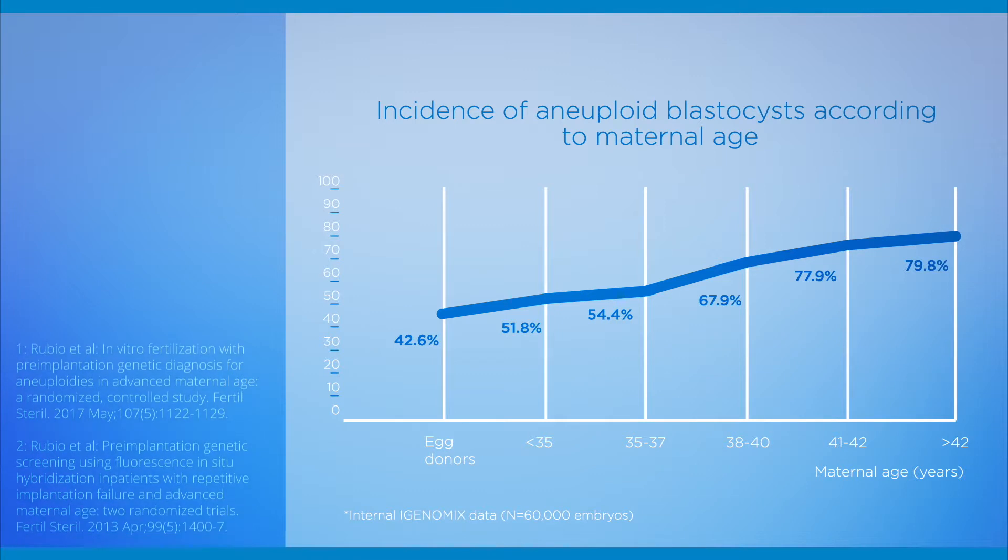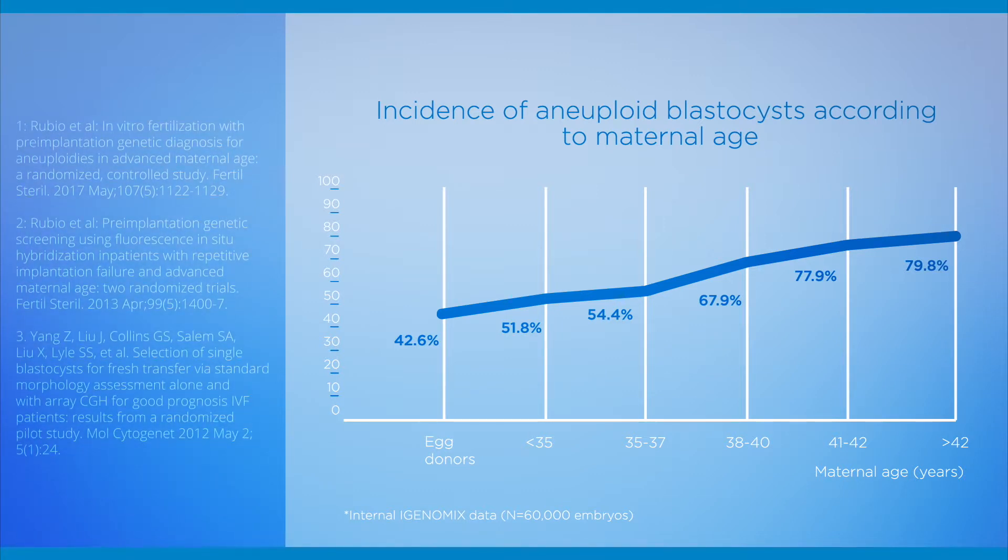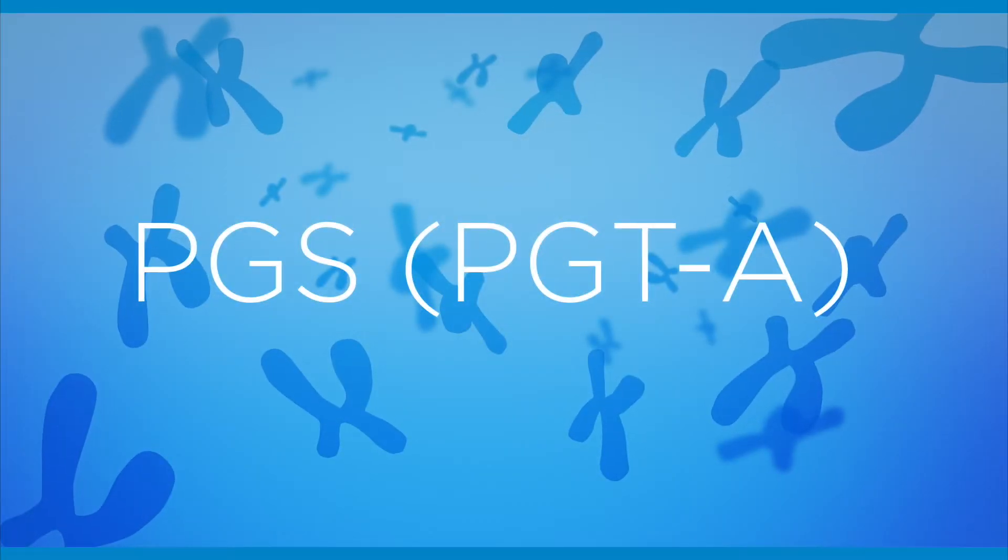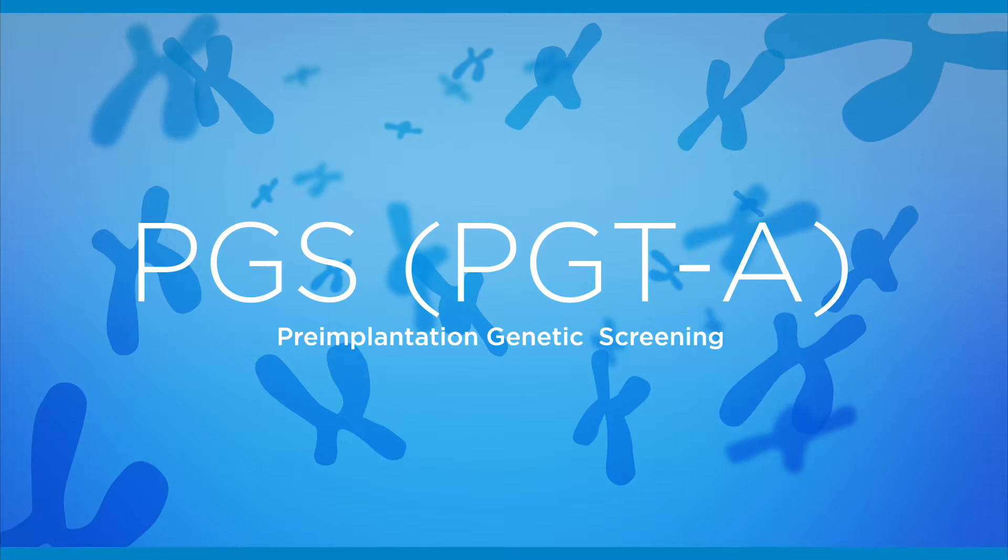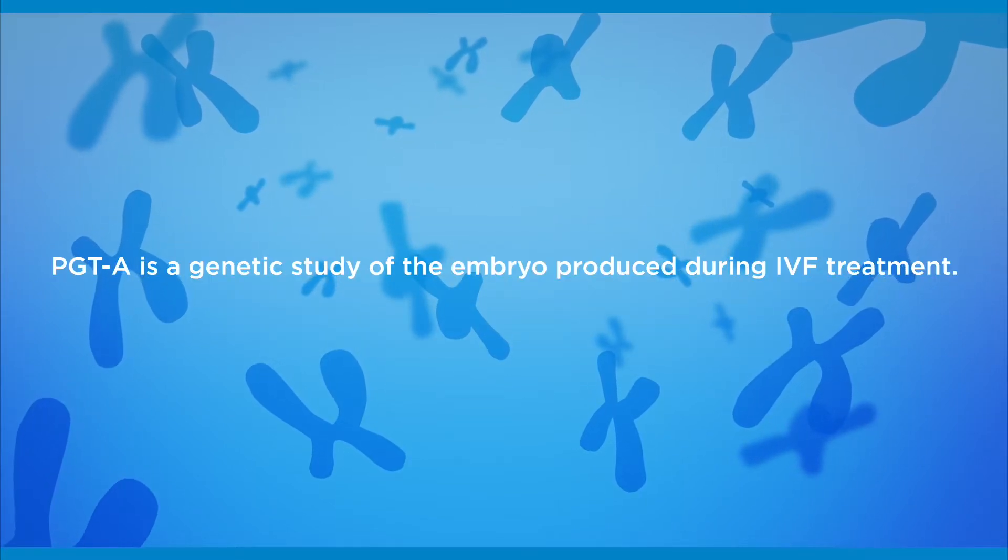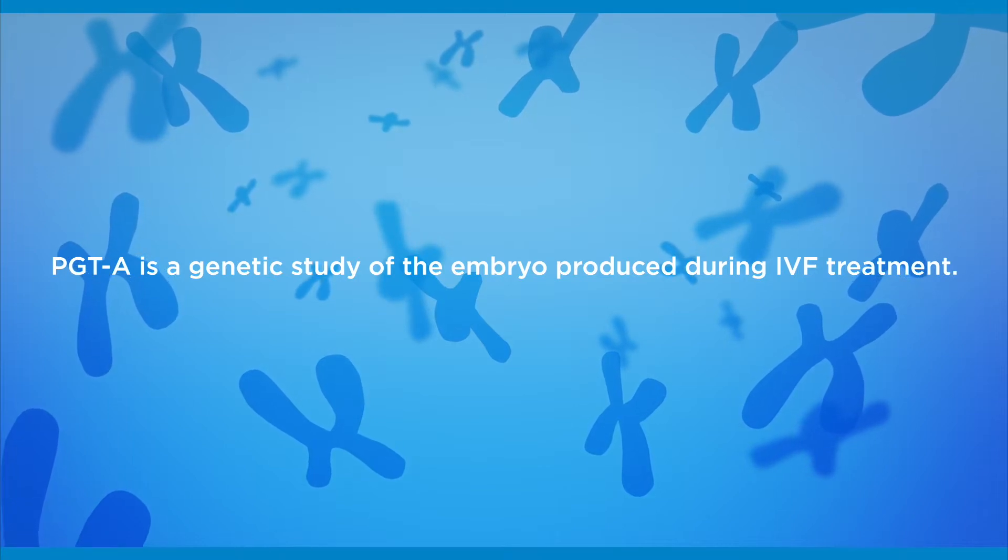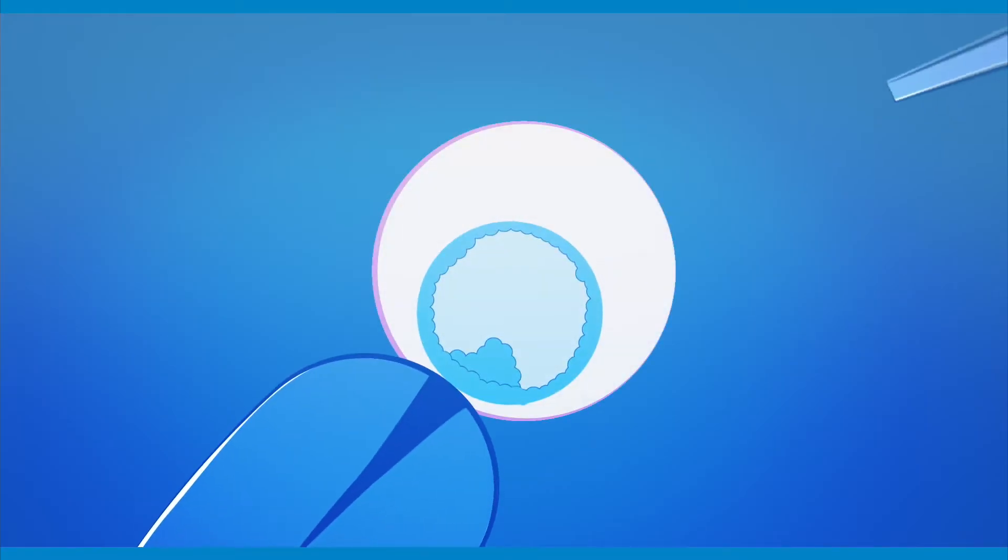According to research from iGenomics and published clinical data, a large number of embryos created during an IVF cycle are chromosomally abnormal and will never lead to a normal pregnancy and live birth. PGS is a genetic study of the embryos from an IVF cycle, which allows you and your physician to select embryos with the highest chance of resulting in a normal pregnancy and a healthy baby.